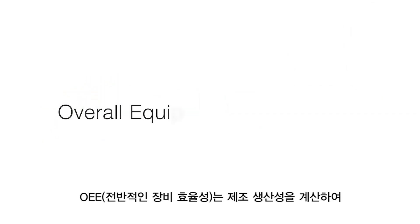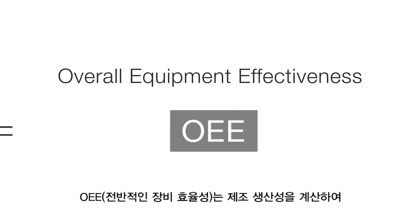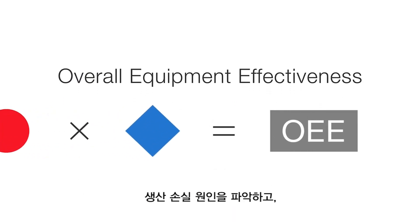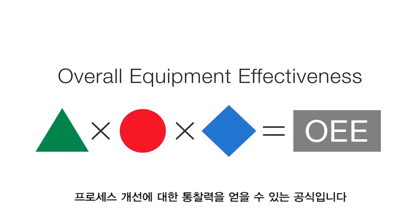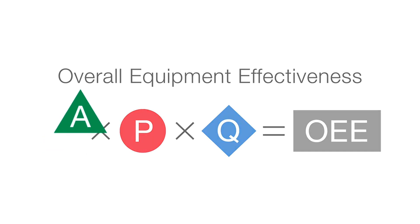Overall equipment effectiveness, or OEE, is a formula that calculates manufacturing productivity and enables you to identify causes of lost production and gain insight on process improvements. OEE is a function of total production availability, performance, and quality.